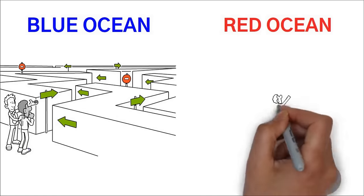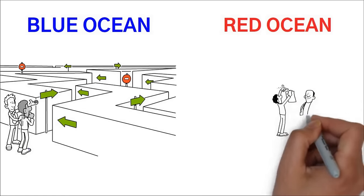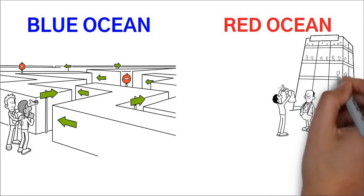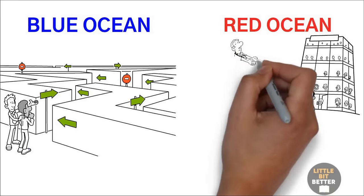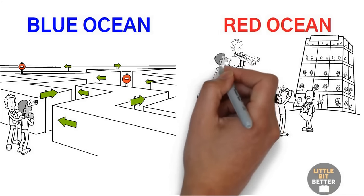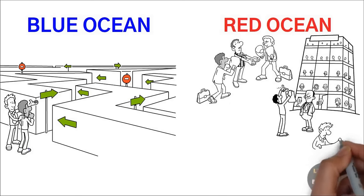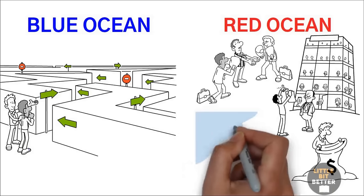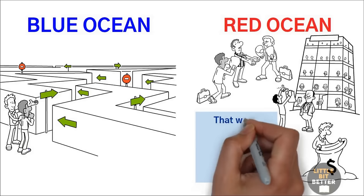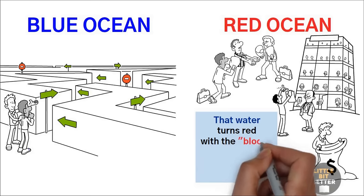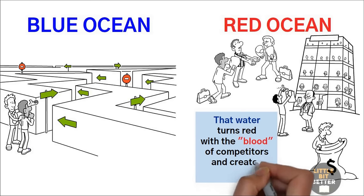On the other hand, the red ocean is crowded with many businesses, all competing for the same customers and resources. In the red ocean, the rules of the game are known, and companies try to outperform each other to grab as much of the existing demand as possible. But as the market becomes more crowded, profits and growth get smaller and smaller. Products become generic, and the competition is so intense that water turns red with the blood of competitors and creates the red ocean.